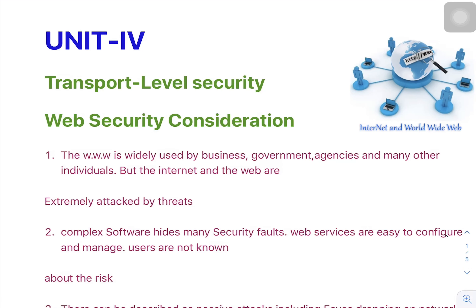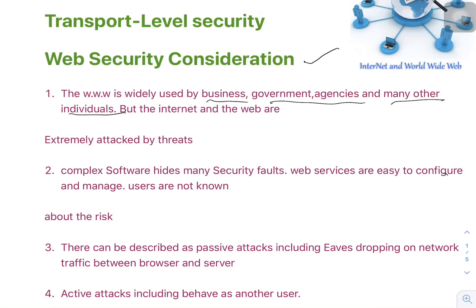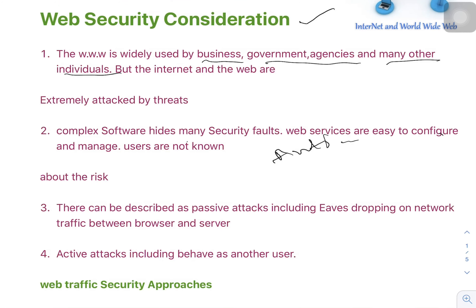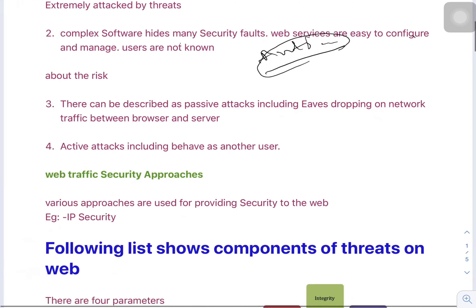Today I'm going to explain transport level security. Our first topic is web security considerations. Nowadays everyone is using the internet throughout the world — businesses, government agencies, and individuals. As users increase, attackers also increase. To overcome these threats, complex software and antivirus tools are used. With the help of antivirus, we can configure and manage security to overcome complex problems.